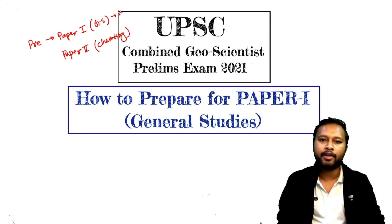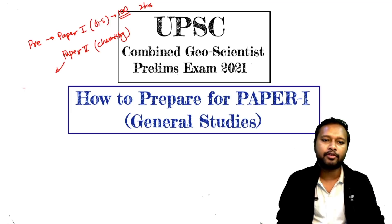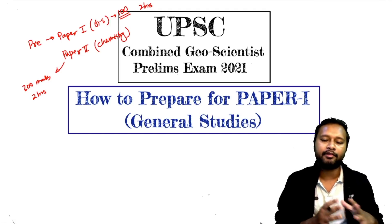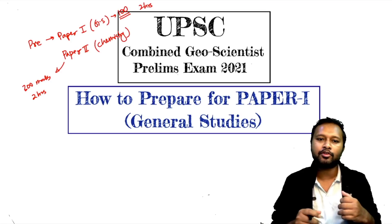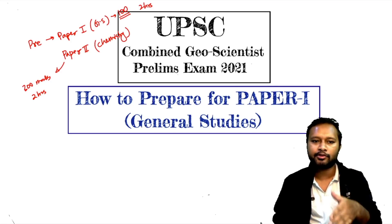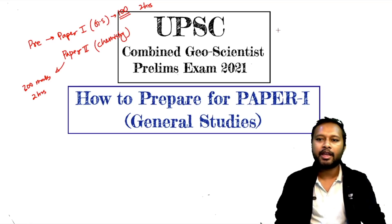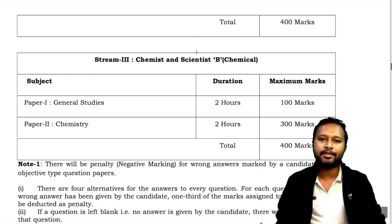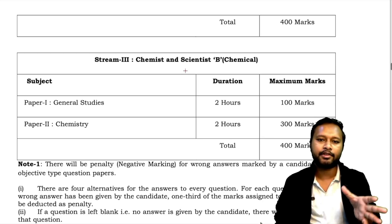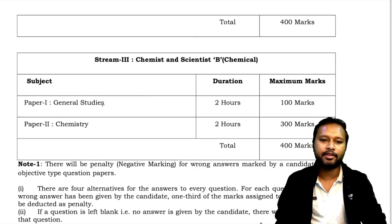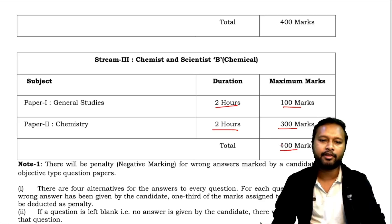Paper 1 is 100 marks and 2 hours, whereas Paper 2 is 300 marks and also 2 hours. So the overall prelims exam is 400 marks total — GS part is 100 marks for 2 hours, and the chemistry part is 300 marks for 2 hours. I've taken this information directly from the official UPSC Geoscientist notification, which you can verify on their website.